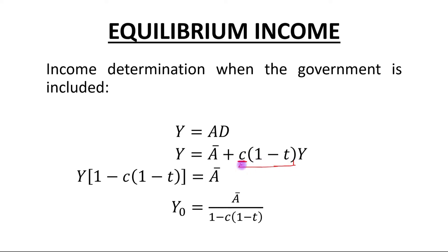After solving, we will get equilibrium level of output as Ā upon 1 minus MPC out of income.